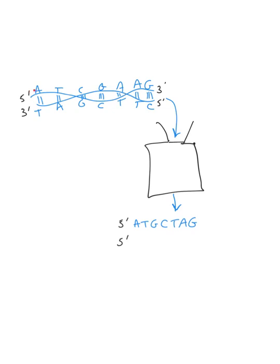The sequencer would also give us the bottom strand, or complementary strand, starting at its five prime end and going to its three prime end. In that case it would be five prime CTAGCAT.